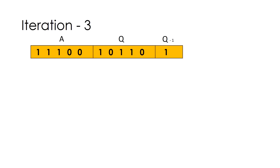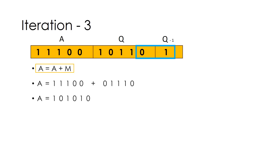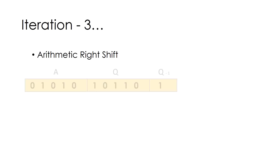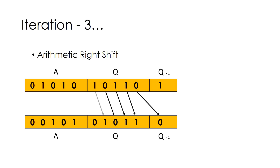Now we perform the third iteration. The row contains A, Q, and Q minus 1. We check the last bits of Q and Q minus 1, which are 0 and 1. Thus, we need to perform A = A plus M. Notice that there is a carry in this case — we can just ignore it. Therefore, A will be 0 1 0 1 0. The row below shows the new value of A with no change in Q and Q minus 1. Then we perform the arithmetic right shift, and the row below contains the new values of A, Q, and Q minus 1 after the shift.